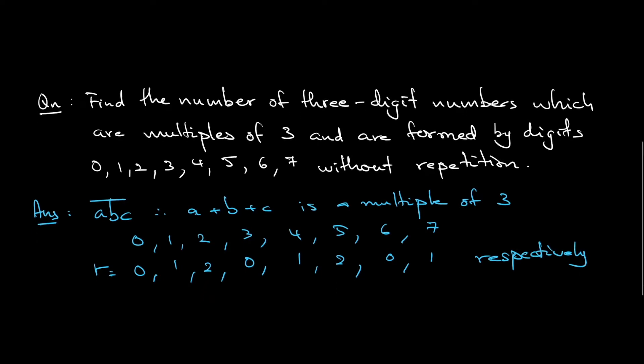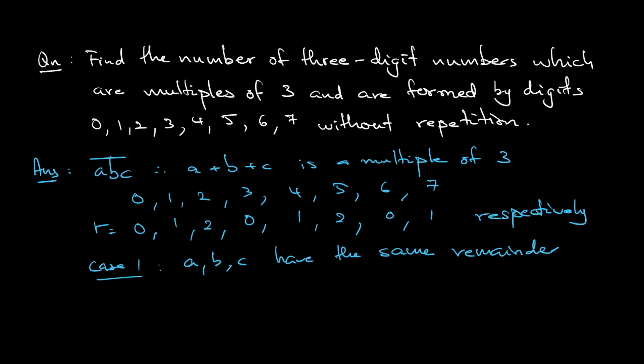So if you want a plus b plus c to be a multiple of 3, Case 1 would be a, b, c all of them have the same remainder. So what I mean by this is let's say a has remainder 0, b also has remainder 0, and c has remainder 0 - add up together is a multiple of 3. To get remainder 0, you can only have 0, 3, and 6.